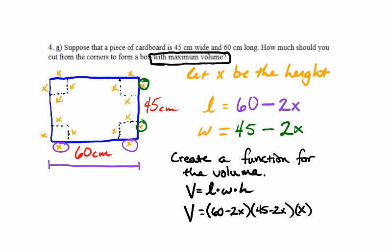We're just going to plug this function into our calculator and find the relative maximum. We're going to graph this function and look for the relative maximum, because that will be our solution. If you have a calculator, take it out. I'm going to open up a new document, add a graph, and put in (60 minus 2x) times (45 minus 2x) times x.